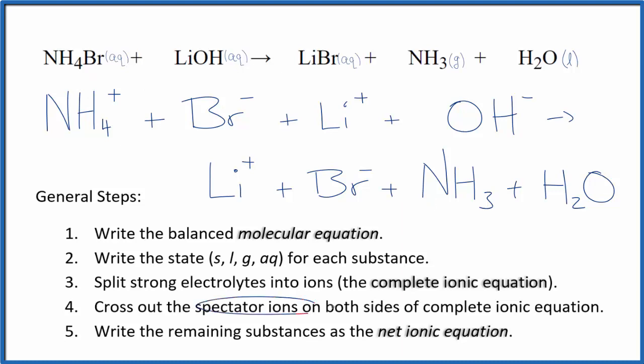Now we can cross out the spectator ions. They're on both sides. So in the reactants, I see I have the bromide ion right here. Again in the products, we can cross that out. That's a spectator ion. We also have the lithium ion right here in the reactants and in the products. We can cross that out too.